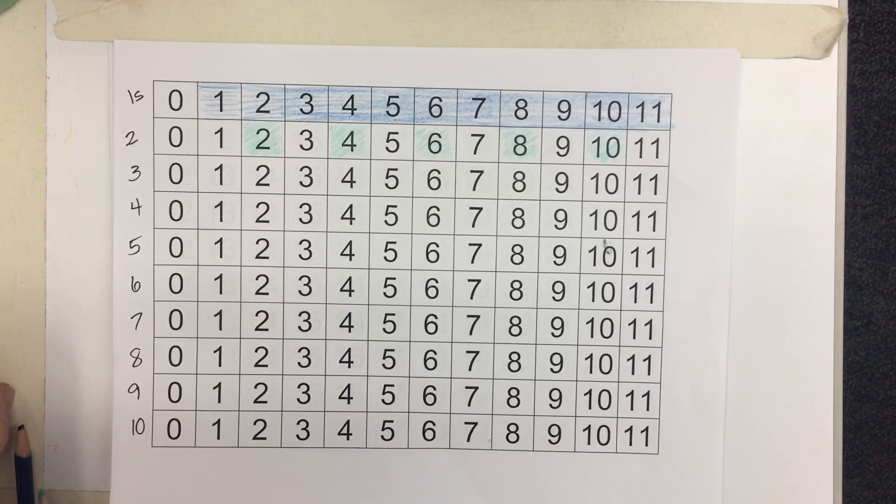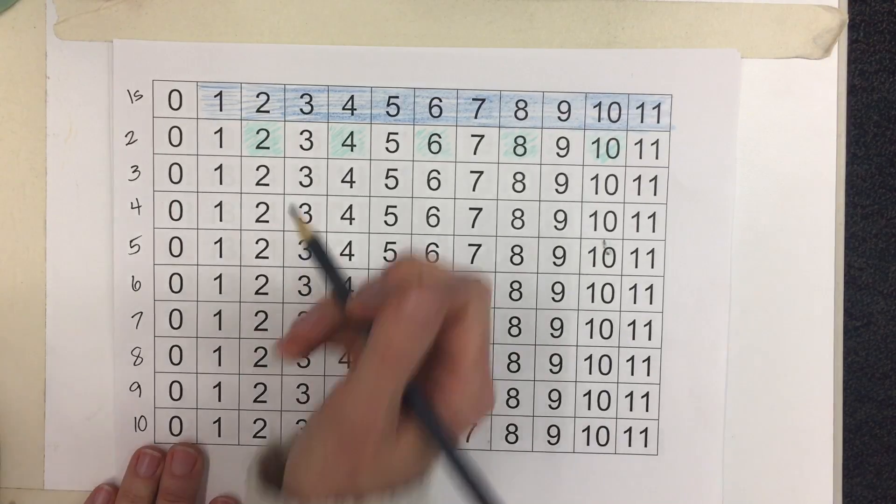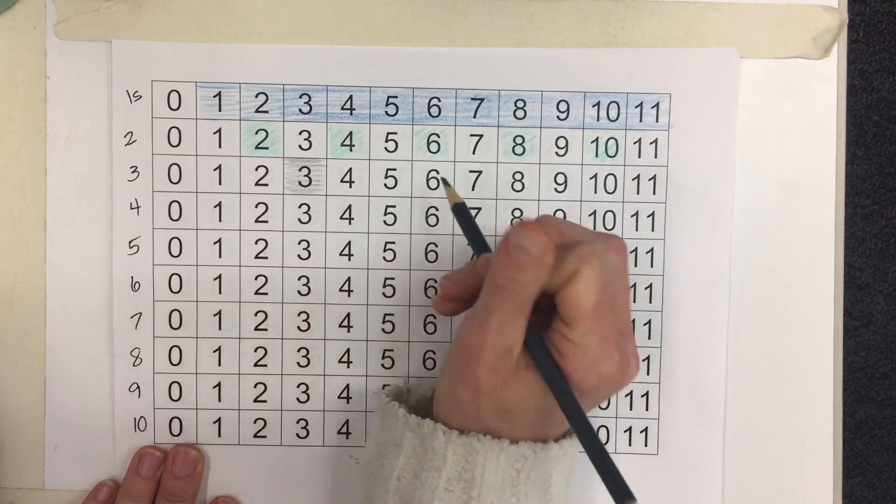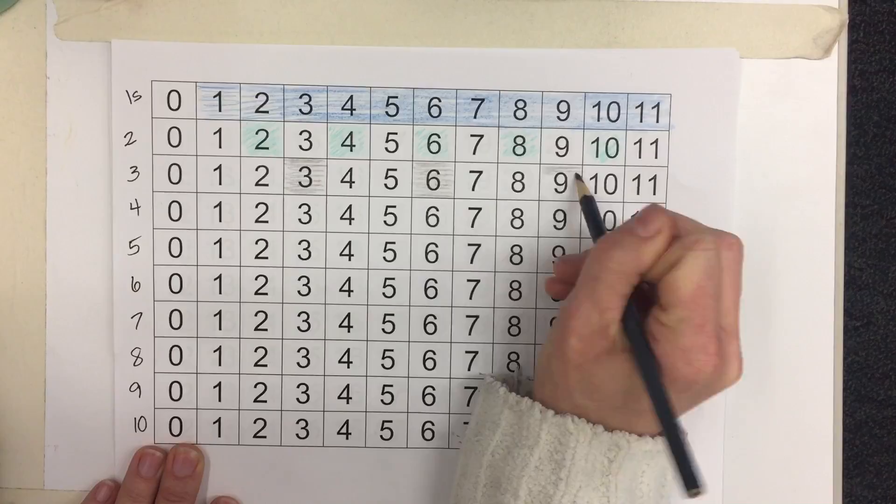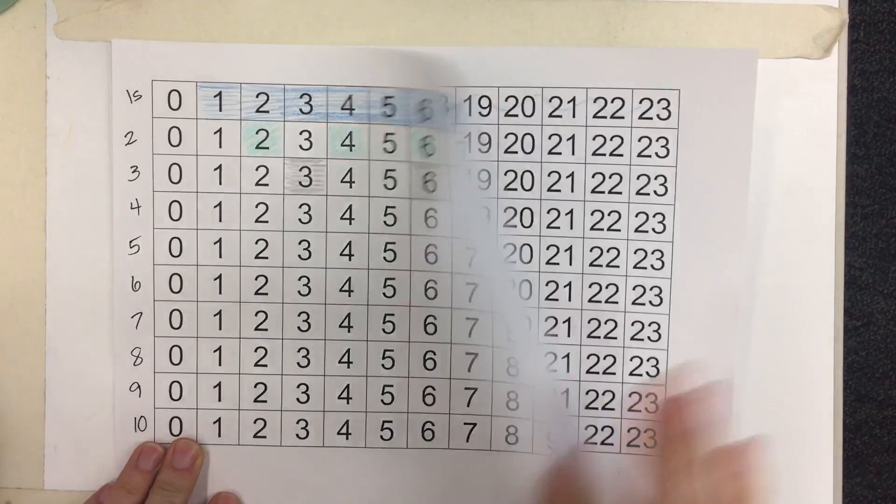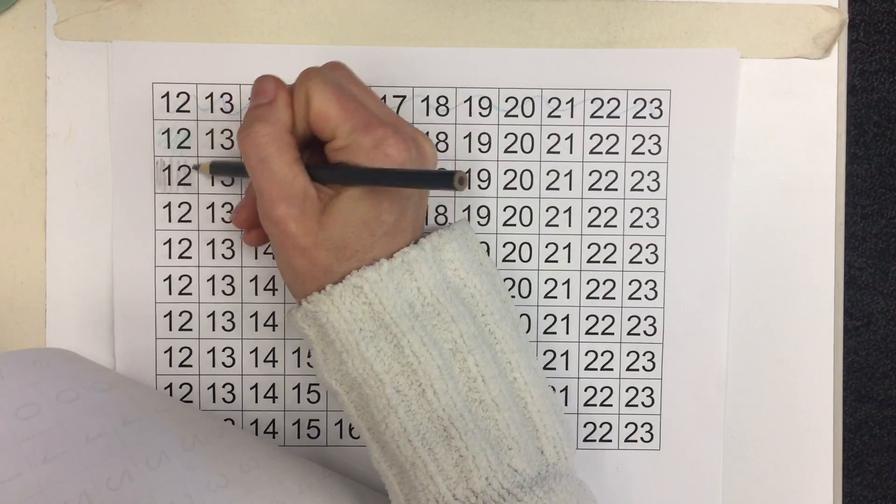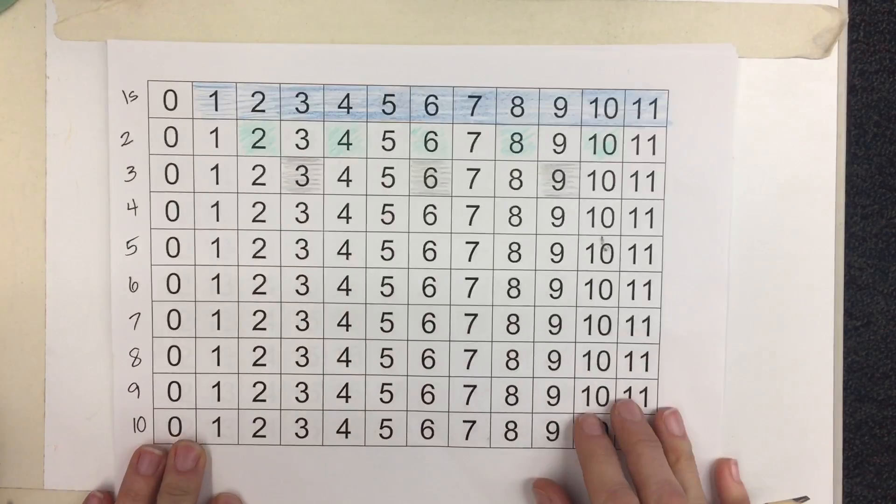And in the third row we're counting by threes so we'll start with 3, count 3 more is 6, 3 more is 9, 3 more is 12 and you'll keep on going all the way till 50 or whatever number you stop at.